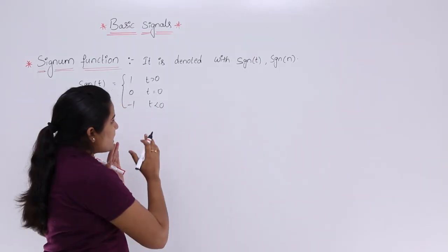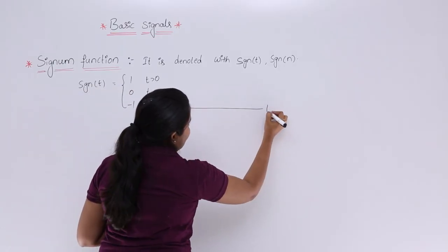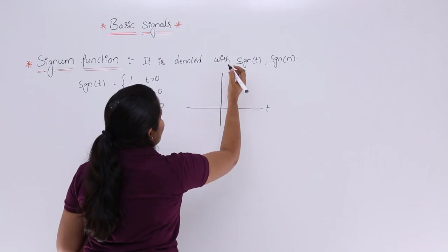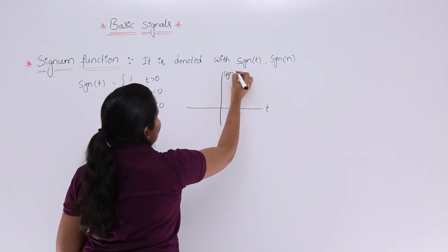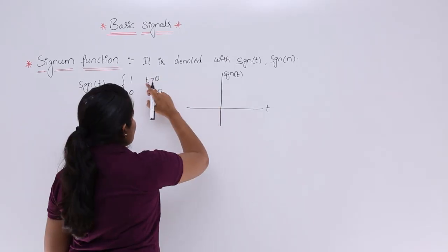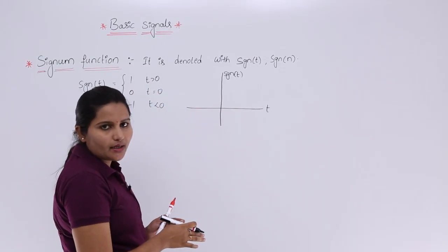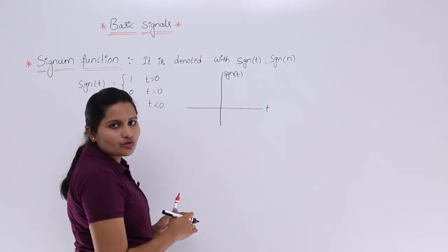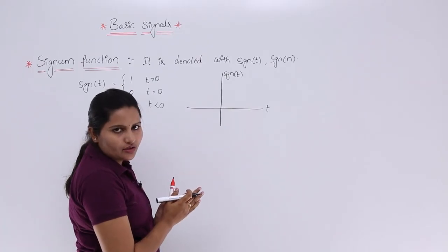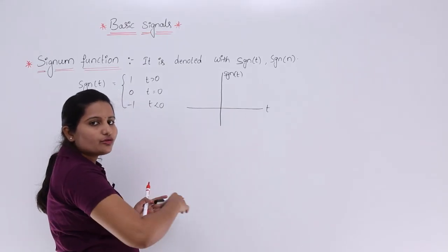If you want to represent this signal function in a graph, you can take the horizontal axis for time and the vertical axis for sgn(t). According to the definition, the signal function is equal to 1 when t is greater than 0. Since this is continuous time, you can take values 0, 0.1, 0.2, 0.3 — there is no gap between the intervals.